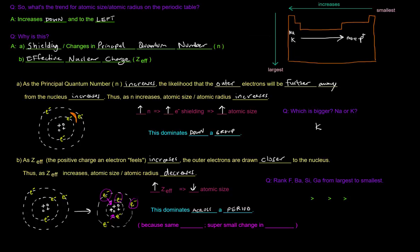Now, the reason why this dominates across a period, because you're probably thinking, well, you're also increasing the number of electrons as you go from element to element across the period. And that's true. But because you're in the same shell, because in each period you're in the same shell, there's a super small change in the shielding.